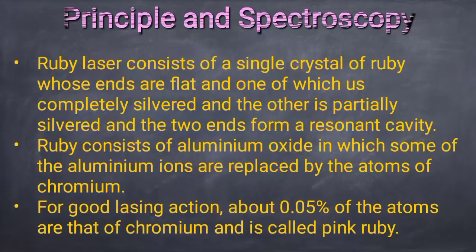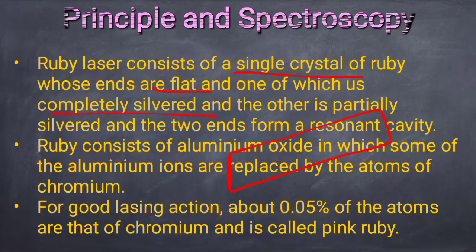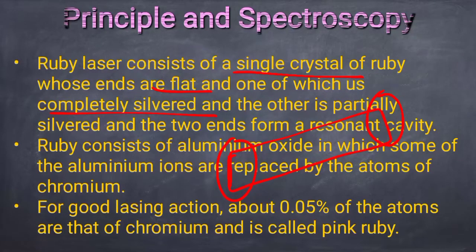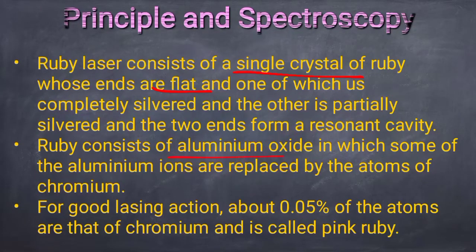The ruby laser consists of a single crystal of ruby whose ends are flat. One end is completely silvered so that 100% reflectivity is possible, whereas the other end is partially silvered so that we get laser action.